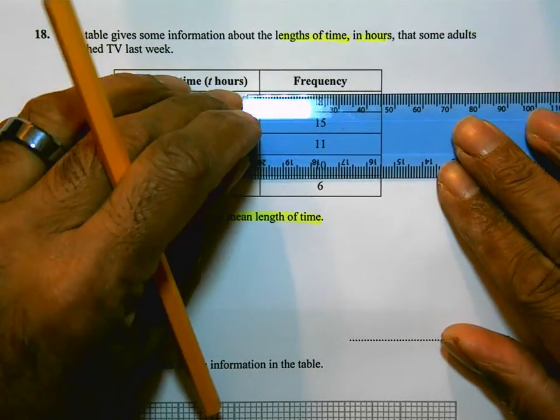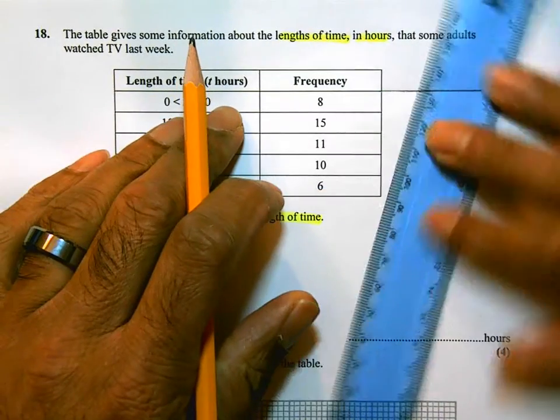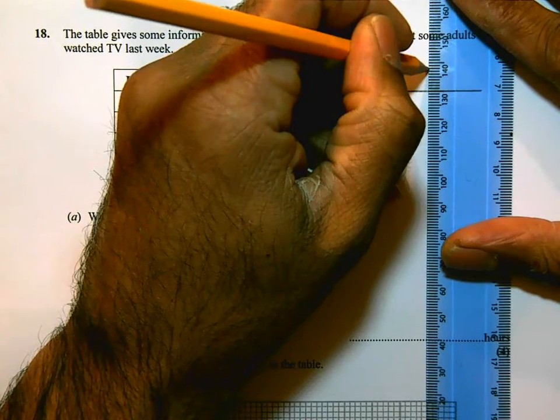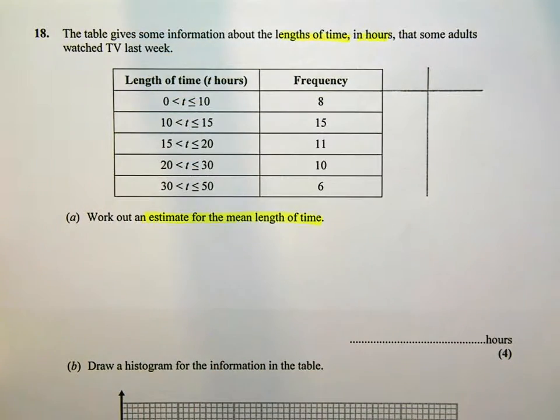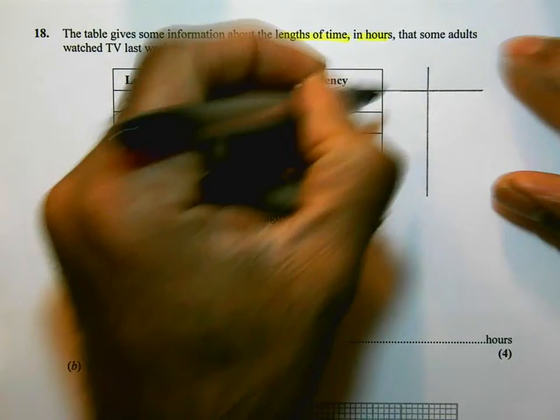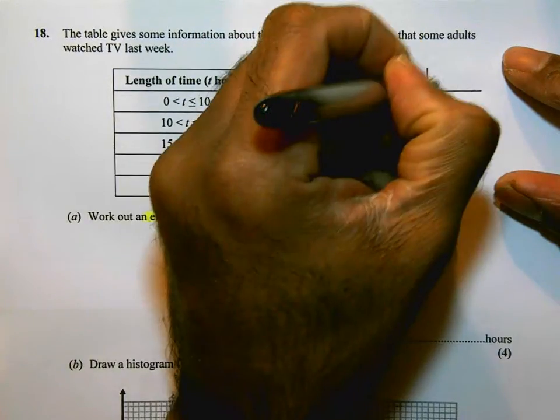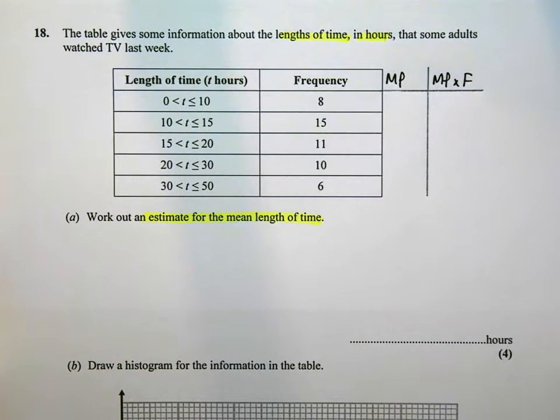First thing we're going to do is extend the table. And we're going to identify the midpoints of the group, and then multiply the midpoints by the frequencies. So extending that there, I'm going to identify the midpoints of each of these groups, and then do the midpoints times the frequencies.